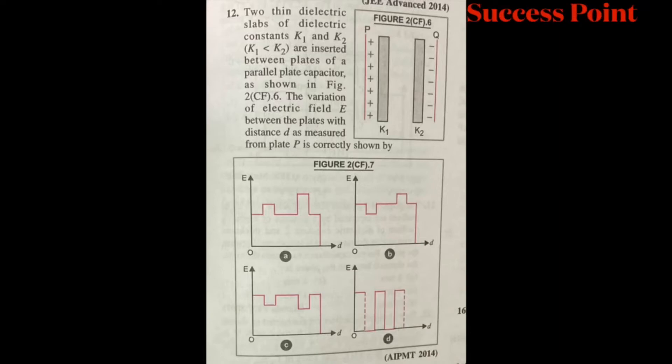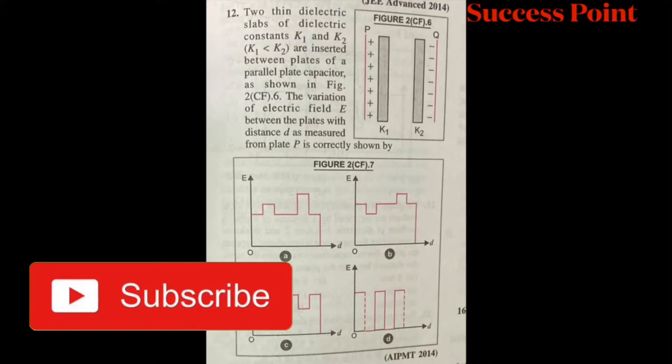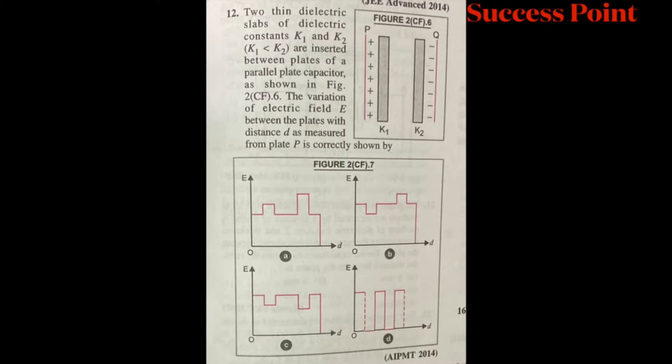Two thin dielectric slabs of dielectric constants k1 and k2, where k1 is less than k2, are inserted between the plates of a parallel plate capacitor as shown in the figure. The variation of electric field E between the plates with the distance d as measured from plate P is correctly shown by which graph?